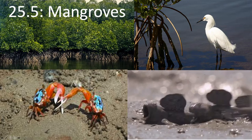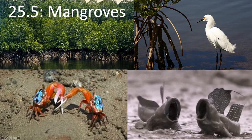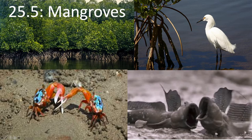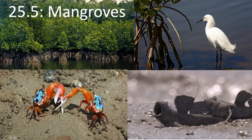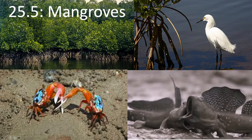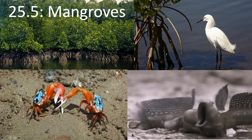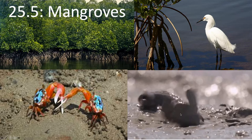Herons and egrets are bird species that live in mangrove habitats. Snails, oysters, barnacles, fiddler crabs, and other land crabs also live there — fiddler crabs and land crabs tend to be scavengers. Mudskippers live there too, because mangroves — lacking wave action — accumulate sediment and mud where mudskippers can live and fight each other for mates.